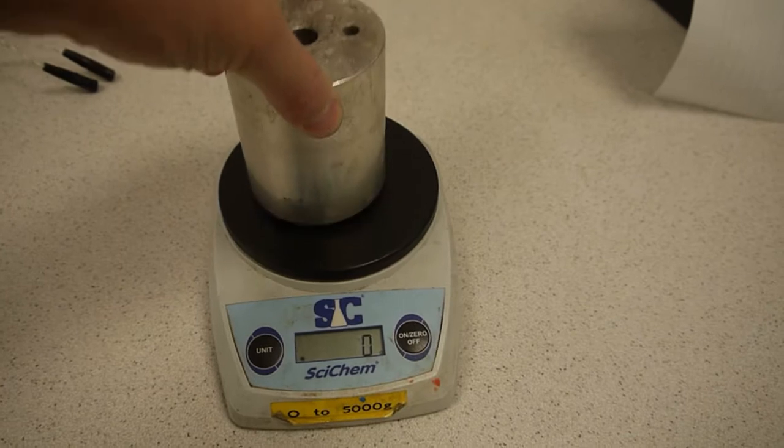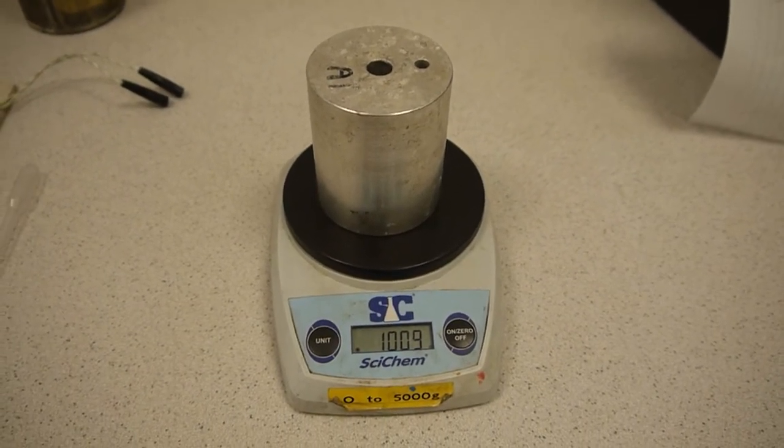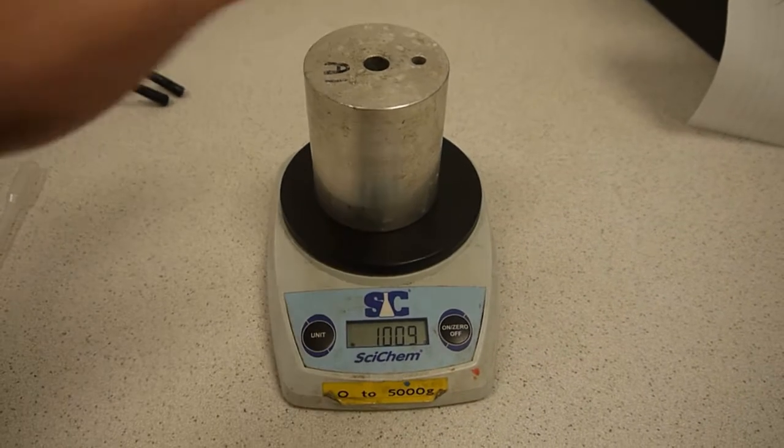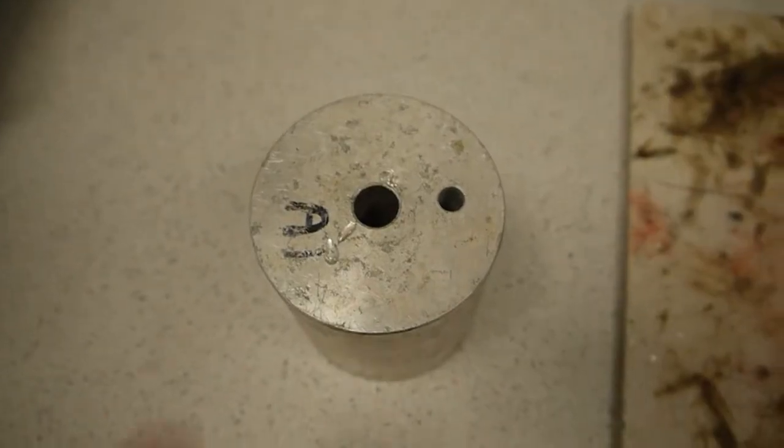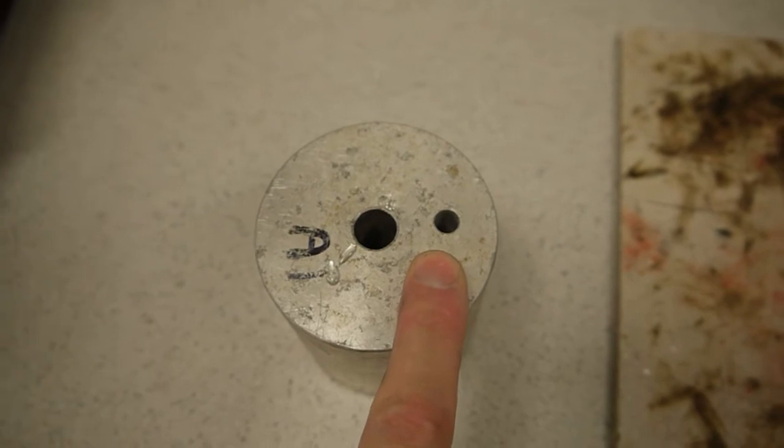In this case we're using an aluminium block which we first find the mass of and we can see this is just over one kilogram. The block has got two holes, one of which is for the immersion heater at the center and the other one is for the thermometer a short distance away.